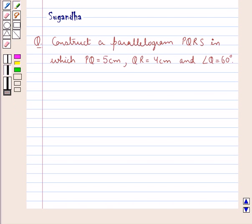Hello and welcome to the session. In this session we discuss the following question which says construct a parallelogram PQRS in which PQ is equal to 5 cm, QR is equal to 4 cm and angle Q is equal to 60 degrees.